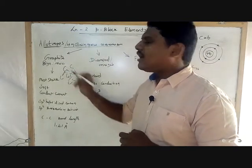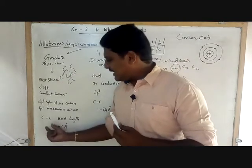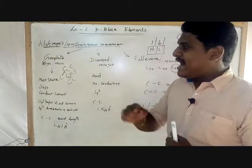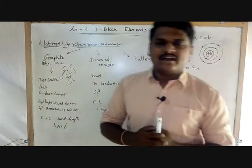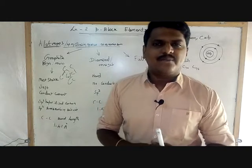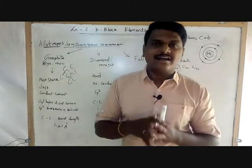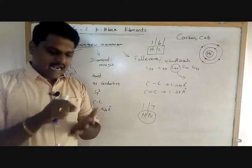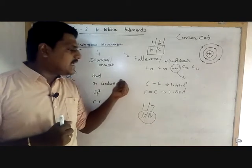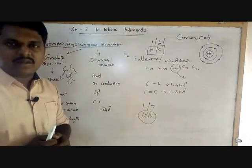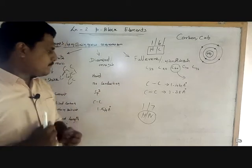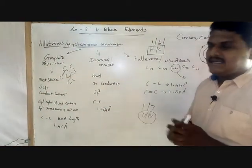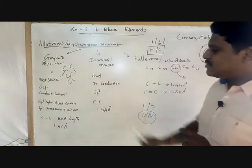The carbon-carbon bond length in graphite is 1.4 Ångströms. Diamond is another allotrope. Diamond is very costly, very hard in nature, and has no electrical conduction. Diamond is SP3 hybridized carbon, whereas graphite is SP2 hybridized.